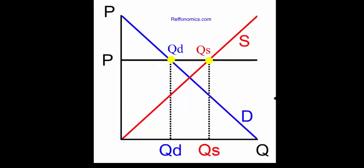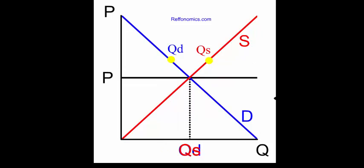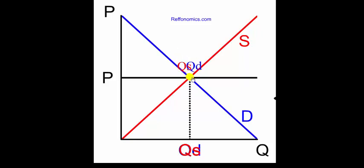If the market is allowed to adjust further, the price will go back to equilibrium, lowering the quantity supplied and increasing the quantity demanded, so they are back at equilibrium where quantity supplied is equal to quantity demanded.